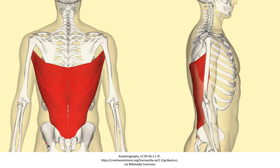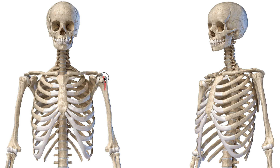Next, we have the latissimus dorsi, the broadest muscle of our back. This muscle originates at the thoracolumbar fascia, also known as the thoracolumbar aponeurosis, as well as at the spinous processes of the vertebrae, a few of the lower ribs, and the inferior angle of the scapula. It inserts on the intertubercular groove of the humerus, also known as the bicipital groove — the groove between the lesser and greater tubercle where the long head of the biceps tendon runs.